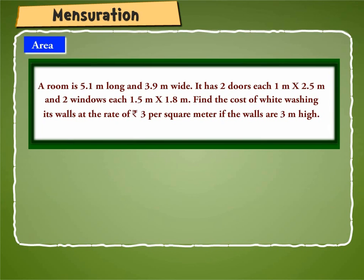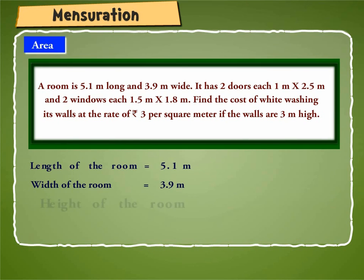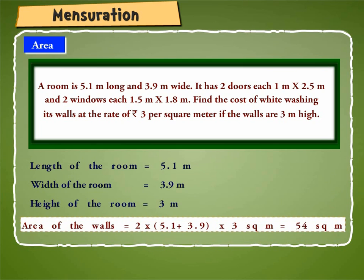As given, length of the room is equal to 5.1 meter and breadth of the room is equal to 3.9 meter while height of the room is equal to 3 meter. Now, area of the walls is equal to 2 into (5.1 plus 3.9) into 3 square meter, which is equal to 54 square meter.